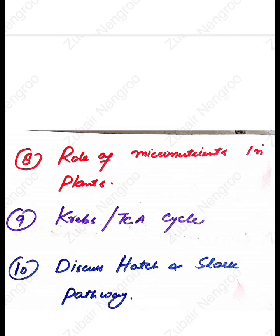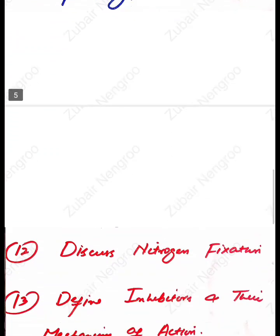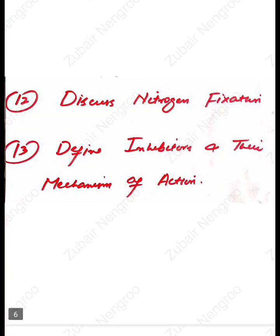The ninth question is: Krebs cycle or TCA cycle. The tenth question is: discuss the Hatch and Slack pathway. After that, the eleventh question — though it is marked as 12th here, it is actually the 11th — is: discuss nitrogen fixation.